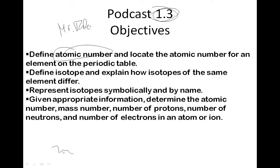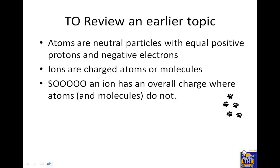Define atomic number, number of protons, locate it for an element on the periodic table, define an isotope and explain how isotopes are different, represent isotopes symbolically and by name, and given appropriate information, figure out protons, neutrons, and electrons. Let's start it.